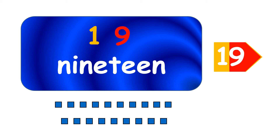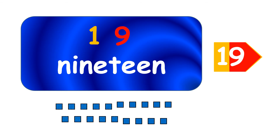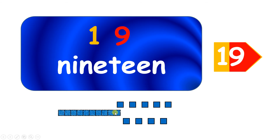Nineteen — and when we make the number nineteen, we can make one group of ten, and how many units? We have nine units, because we have nine left over.